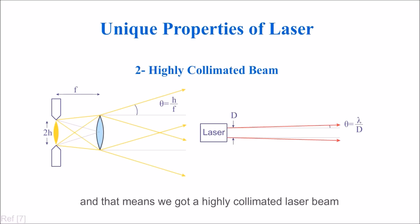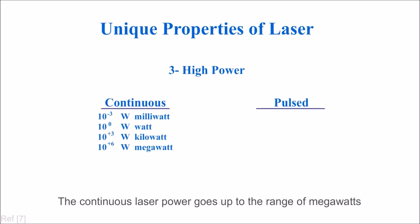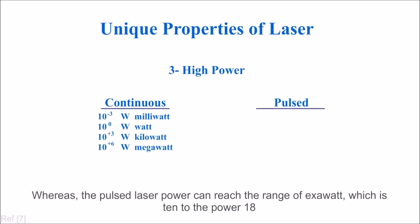High power: the laser light can be either continuous or pulsed. The continuous laser power goes up to the range of megawatts, whereas the pulsed laser power can reach the range of exawatts, which is 10 to the power of 18.